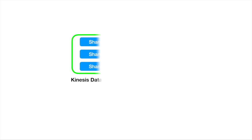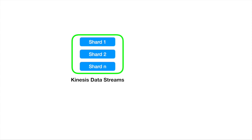Let's look at some graphical content. A Kinesis Data Stream is a collection of shards. When creating a Kinesis Data Stream, customers need to specify the number of shards they want to use, and they can increase or decrease the number of shards at any time after creating the stream.